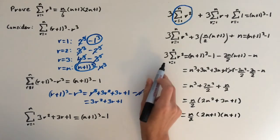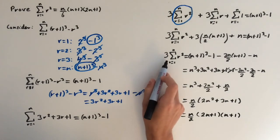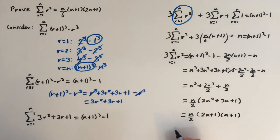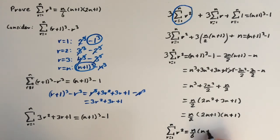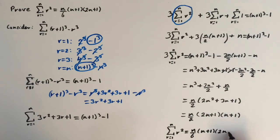The last step is to divide both sides by 3. This gives us the sum of r squared from r equals 1 to n, which equals n over 6 times n plus 1 times 2n plus 1. And there we go — we've proved what we set out to prove.